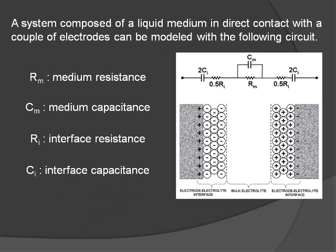When a liquid sample is placed in direct contact with a couple of electrodes, the system can be described with the electrical model shown in the figure, where R-M and C-M are the resistive and capacitive components of the bulk medium, while R-I and C-I are the components of the electrode-electrolyte interface. The impedance technique is based on the principle that bacterial metabolism transforms uncharged or weakly charged compounds into highly charged compounds, thus changing the sample's electrical parameters.